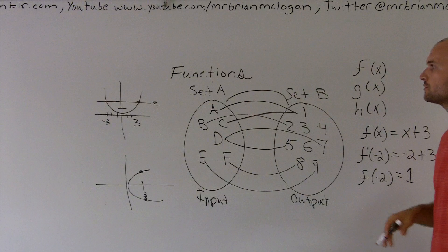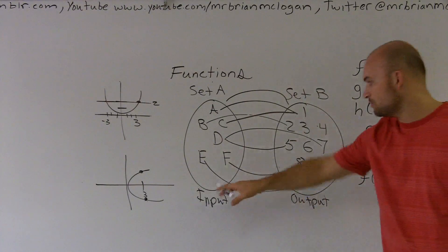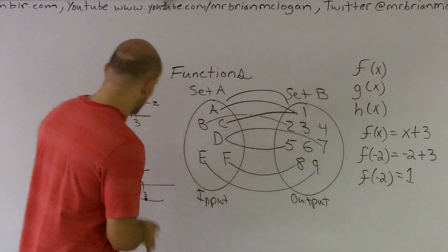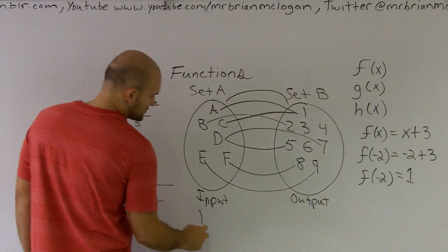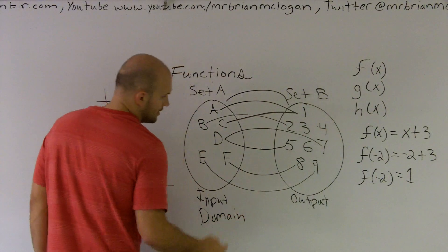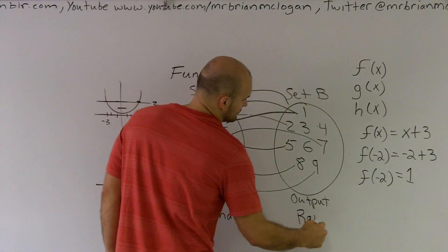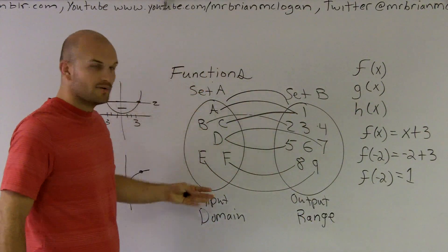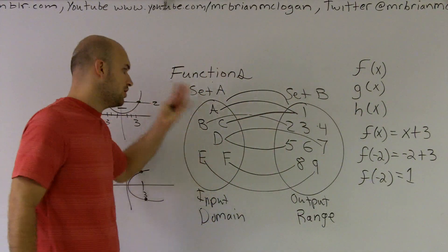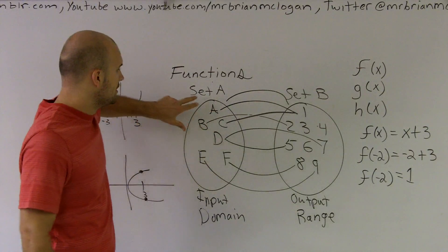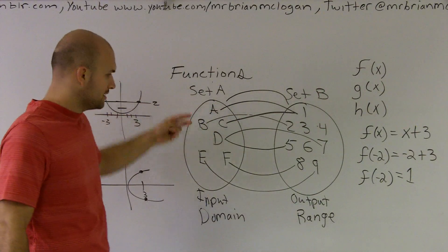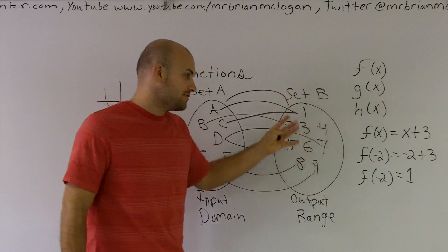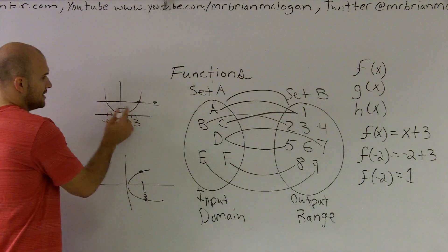The last couple things I want to go over is we have input and output variables. When dealing with graphs, we're talking about the domain and the range. The domain is your input values - the set of all values that make your function true. Your range is all your output values in your graph.